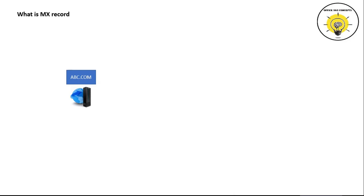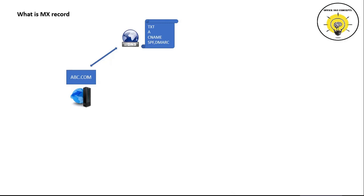Let's assume that we have an organization abc.com. This organization owns a domain that is abc.com and all the required DNS records are published within their public DNS except the MX record. So in this scenario, the email flow within abc.com organization will work — all users of abc.com will be able to send and receive emails internally. However, abc.com will not be able to receive emails from an external domain because they haven't published an MX record.